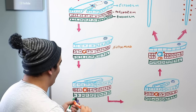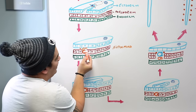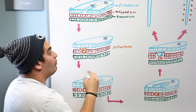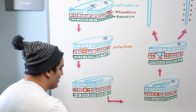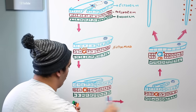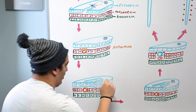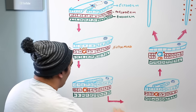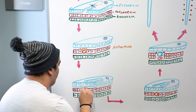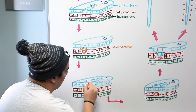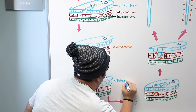So we went: bilaminar disc → trilaminar disc → notochord. The notochord is important because it secretes certain growth factors and proteins that stimulate ectodermal cells to proliferate and thicken. This thickening causes a specialized structure called the neural plate to form on the ectoderm.